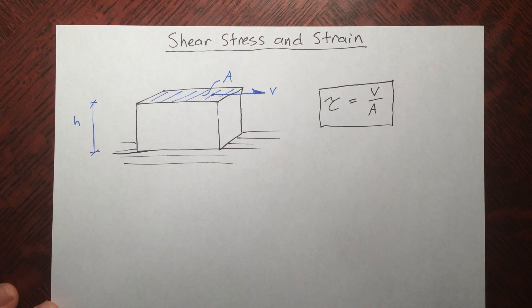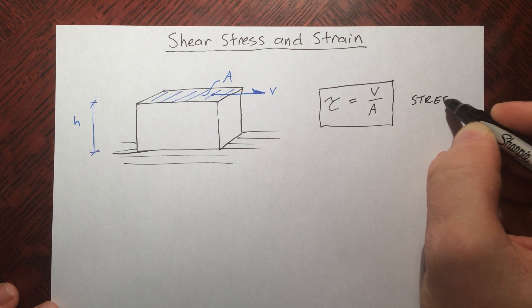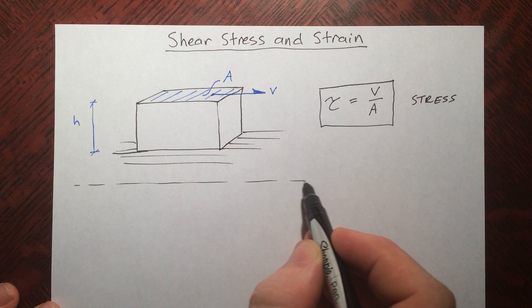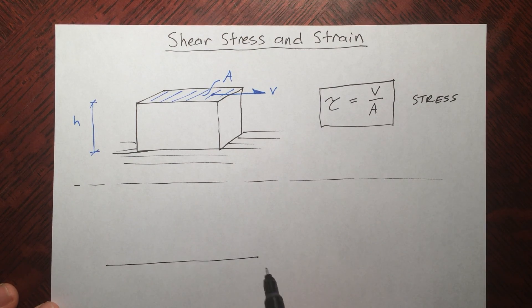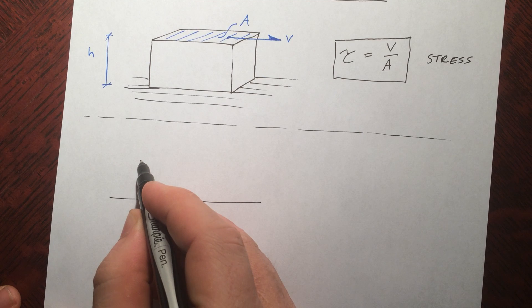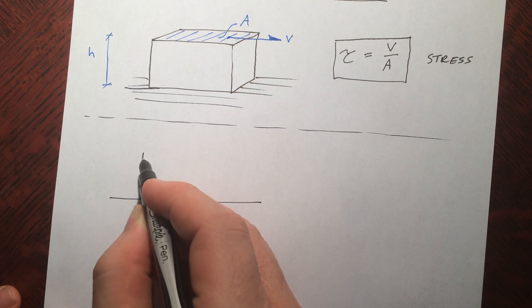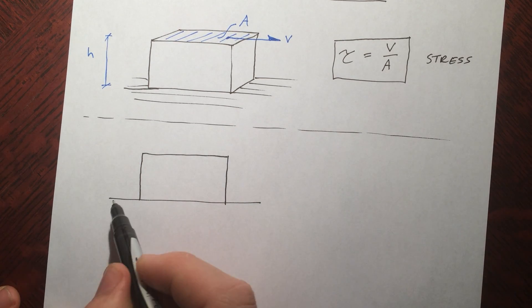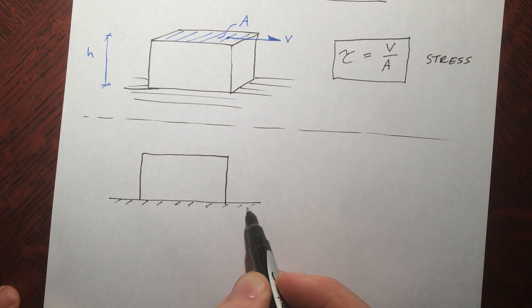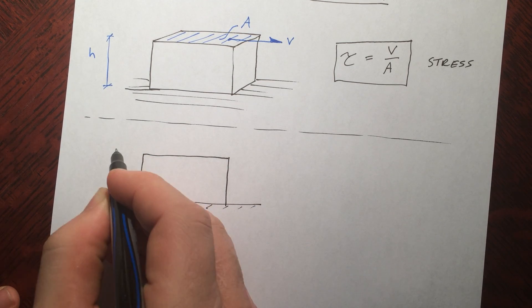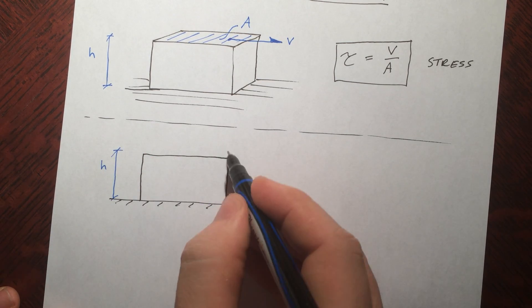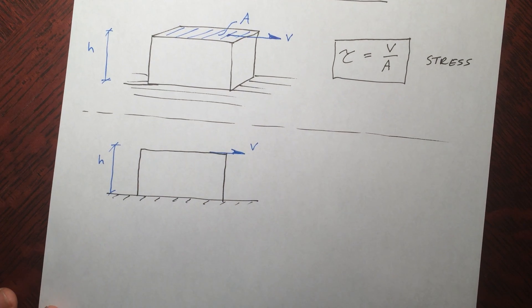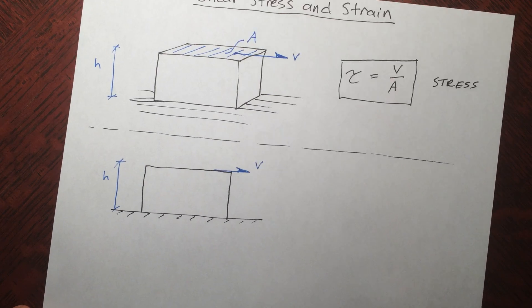Nice and simple, just like normal stress, sigma equals N over A. That's our stress. Now I want to go into strain. Let's take the same box, draw it again down here. I want to only draw the cross section here, still has a height h.